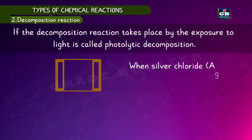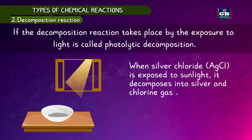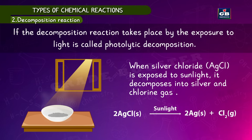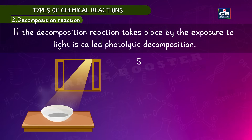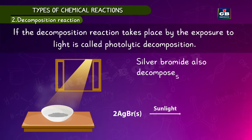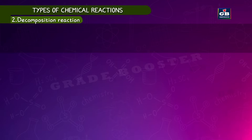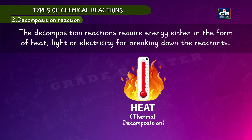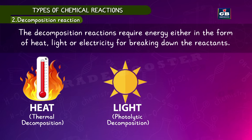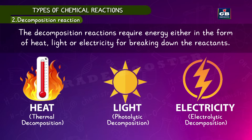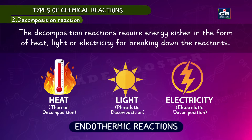If decomposition takes place by exposure to light, it is called photolytic decomposition. When silver chloride is exposed to sunlight it decomposes into silver and chlorine gas: 2AgCl → 2Ag + Cl₂. Silver bromide also decomposes by sunlight: 2AgBr → 2Ag + Br₂. Decomposition reactions require energy in the form of heat, light, or electricity. Reactions in which energy is absorbed are called endothermic reactions.